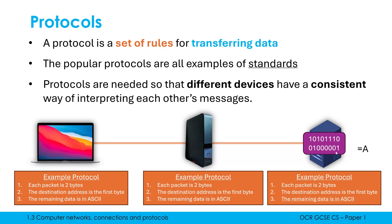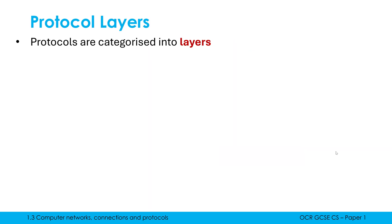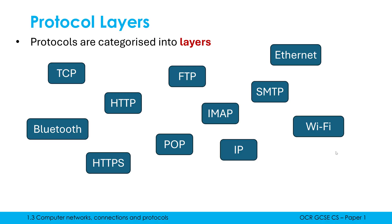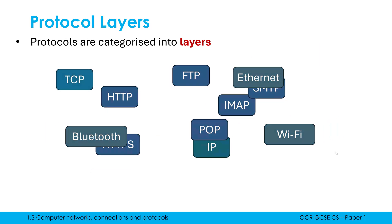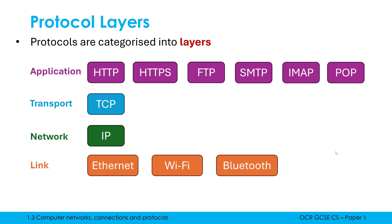There are lots of particular protocols for communication — this is the list you need to know about. Because there are so many, we categorize these protocols into what are called layers. These aren't just scattered about; they are grouped into layers, and the layers have names. These four names are the most common, however you don't need to know these names for GCSE. This is how the protocols you need to know are grouped together in these layers.